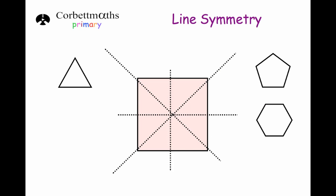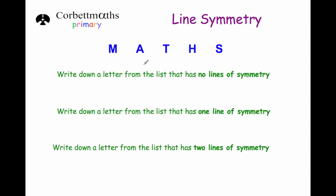Let's have a look at a typical exam question now. Here we've got five letters: M, A, T, H, S. The question asks: write down a letter from the list that has got no lines of symmetry; write down a letter from the list that has one line of symmetry; and write down a letter from the list that has got two lines of symmetry. What I'm going to do is draw the lines of symmetry on the five letters first and then we can answer the questions.